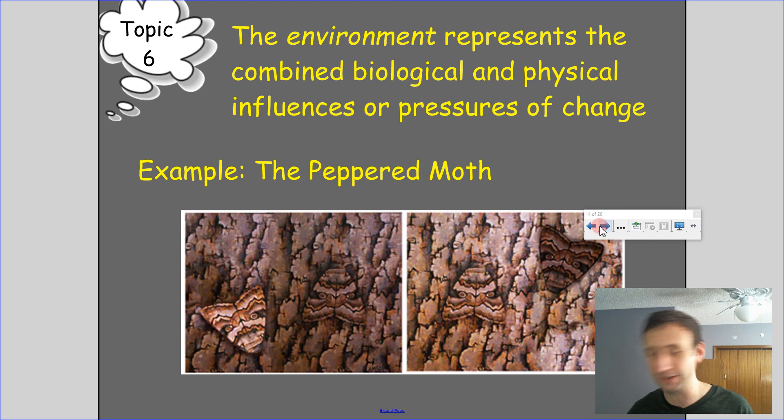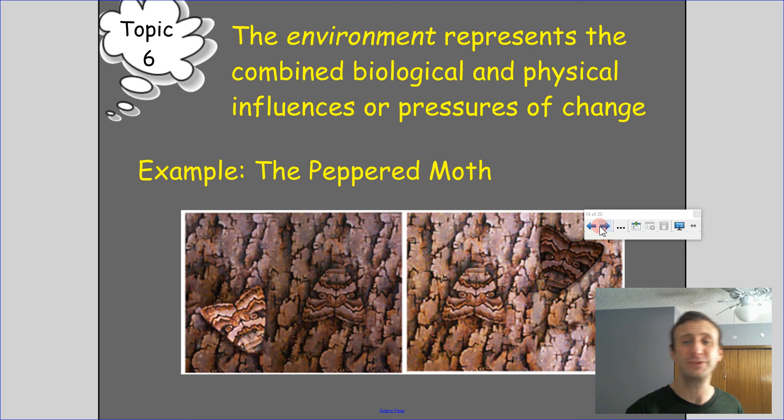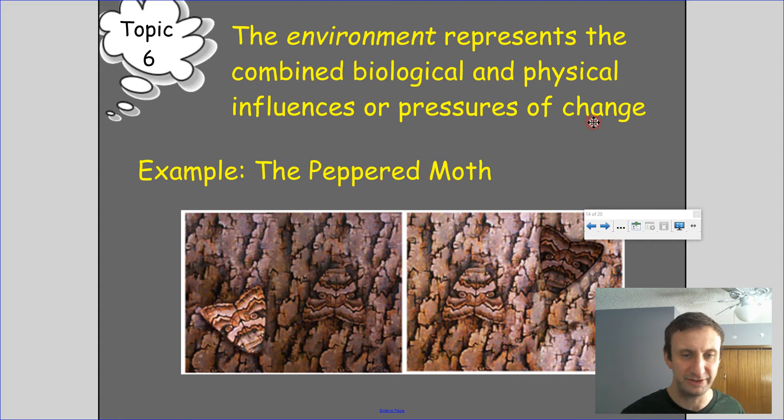The lighter moths couldn't reproduce because they were killed by birds. Then, over time, coal ended up not being burned as much, the bark got lighter again, and the effect reversed — dark moths now had high contrast and were easier for predators to find, while lighter moths were more camouflaged. You can see that effect right here — this one is a lot easier to see than this one.